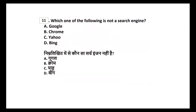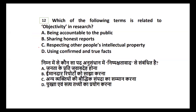Question eleven: which of the following is not a search engine — Google, Chrome, Yahoo, or Bing? The odd one out is Chrome, because Chrome is a browser, not a search engine. Google, Yahoo, and Bing are search engines. Search engines are software, and Chrome is a web browser.